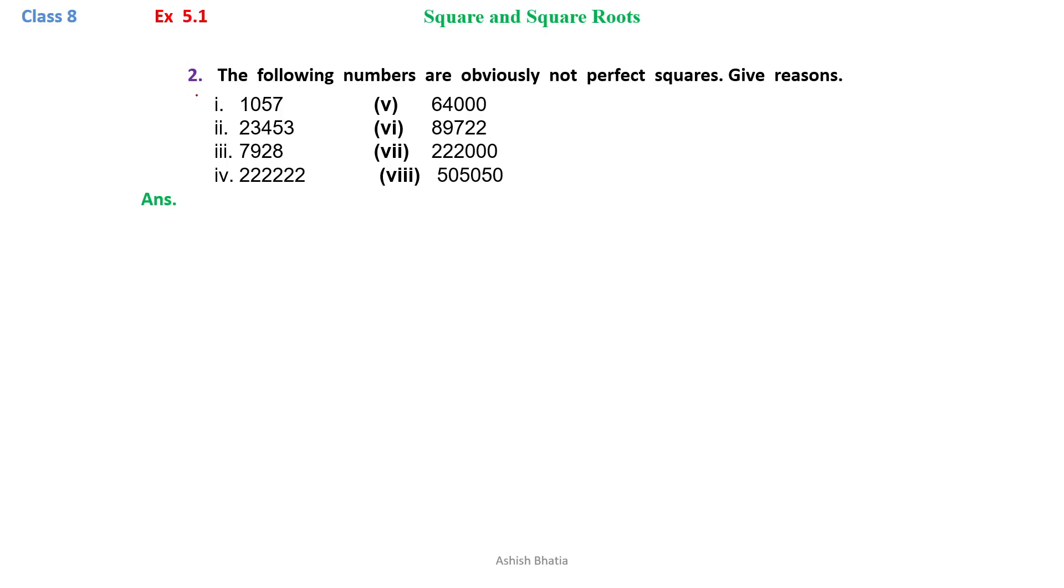Exercise 5.1, Question number 2: The following numbers are obviously not perfect squares. Give reasons.